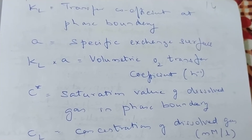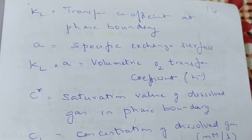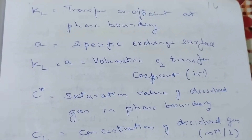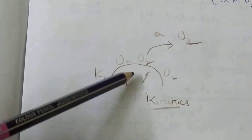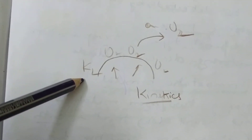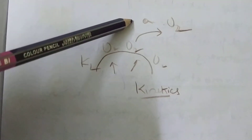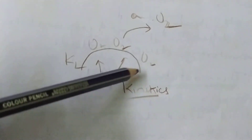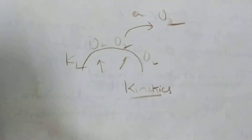And 'a' is the specific exchange surface — how many oxygen bubbles will come to the phase boundary is what that 'a' represents. Imagine the bubble carries oxygen; with what kinetics is it going to enter? The kinetics of the push of oxygen, with low surface tension on the surface of the bubble, is kL. 'a' is the specific exchange surface between the bubble and the liquid around it. Similarly, reverse it — imagine this is a cell and oxygen is coming onto the cell. This is called oxygen transfer coefficient.